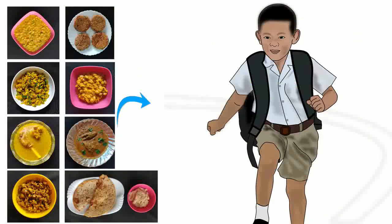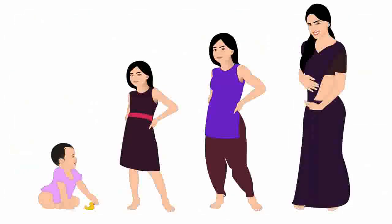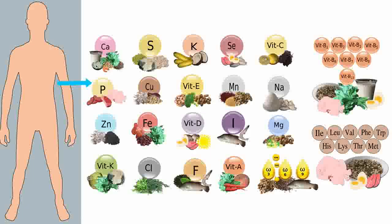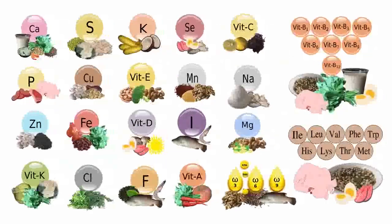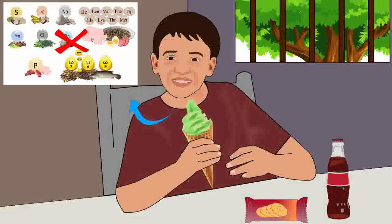Food gives us energy and nutrients. Nutrients are necessary for the growth and maintenance of our body. Some of these nutrients cannot be produced by our body — such nutrients are called essential nutrients. There are 40 essential nutrients that we must obtain from food. We cannot get adequate amounts of these nutrients from nutrient-poor foods.